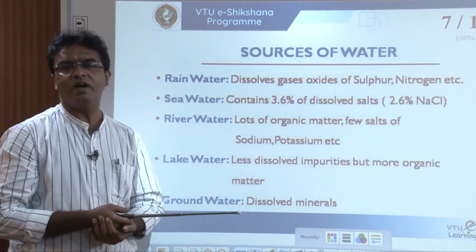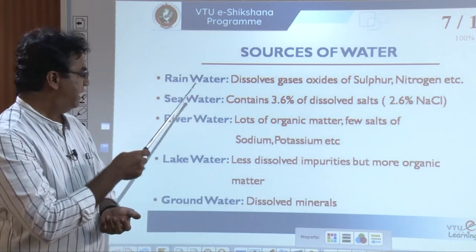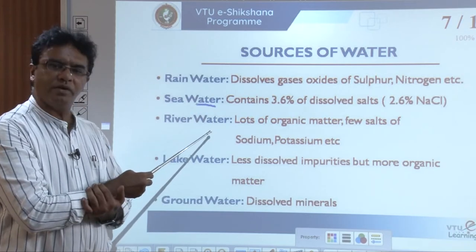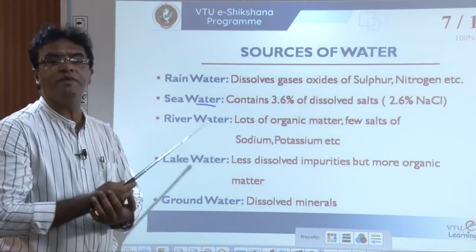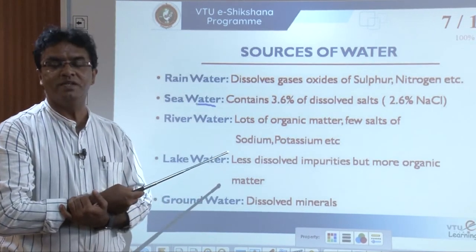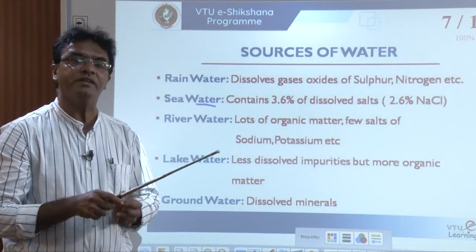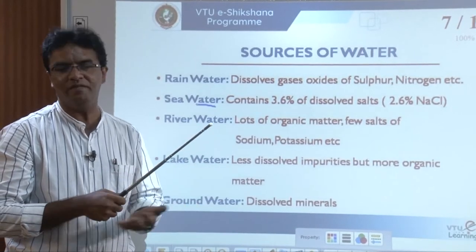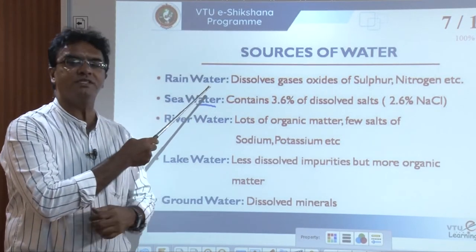There are mainly five different sources of water: rain water, sea water, river water, lake water, and ground water. Almost every source of water is impure to one or the other extent. We cannot have 100% pure water generally, but if any water sample contains impurities within the permitted limit, then we can say that water sample is potable water.